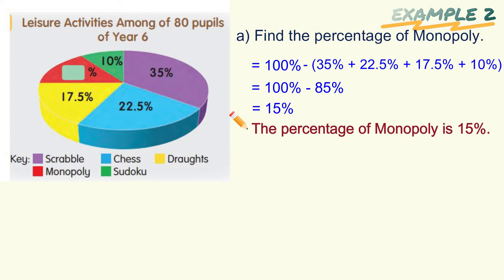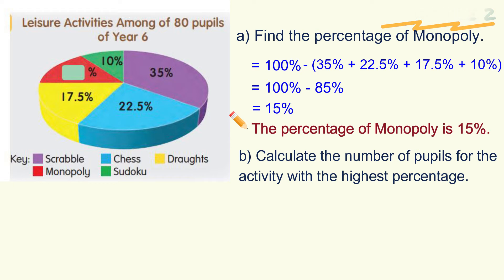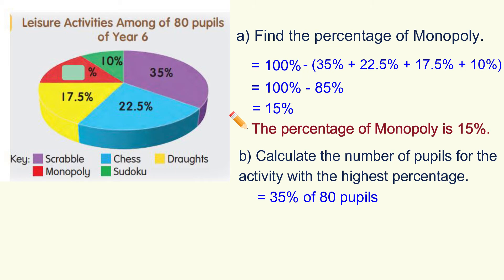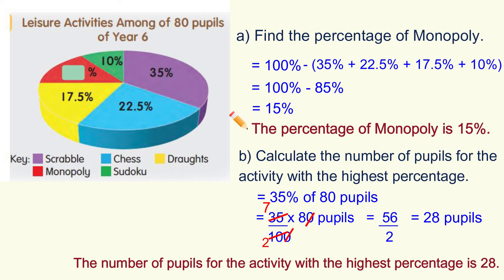B: Calculate the number of pupils for the activity with the highest percentage. First, find the game with the highest percentage — it is Scrabble. To find the number of pupils, we need to multiply the percentage by the total number of pupils. So it will be 35% of 80 pupils: 35 over 100, multiplied by 80, we will get 28. The number of pupils for the activity with the highest percentage is 28.